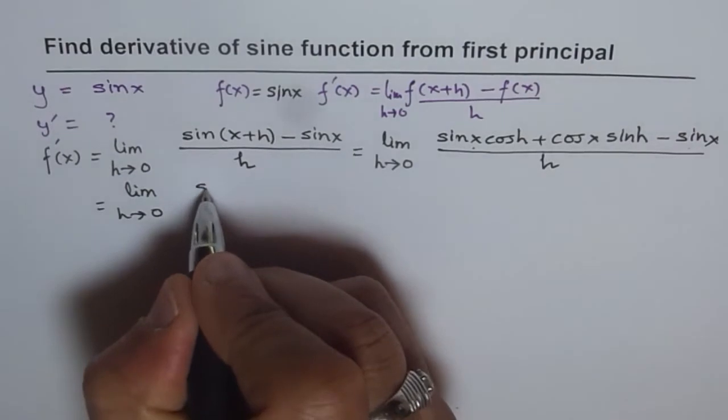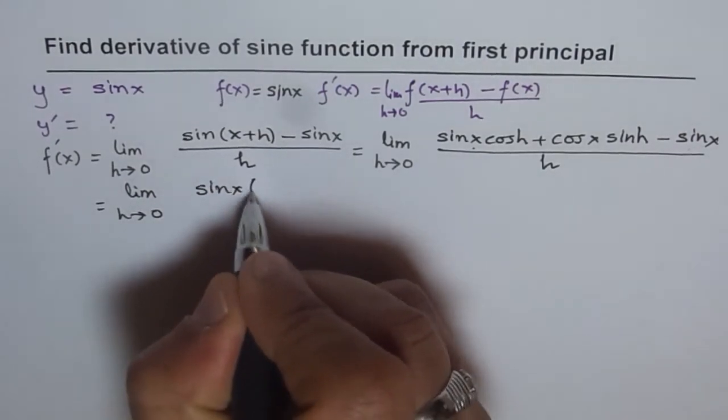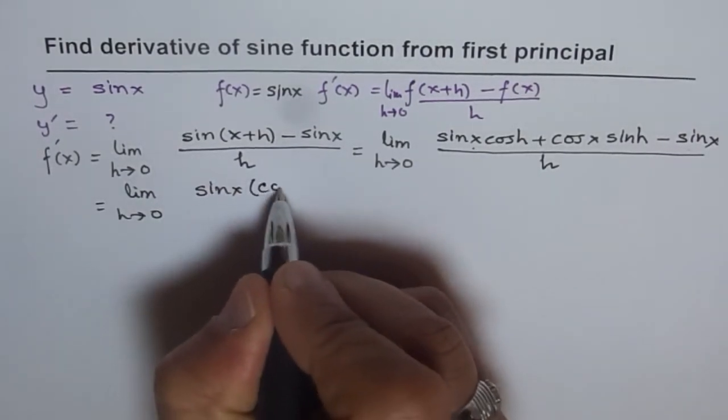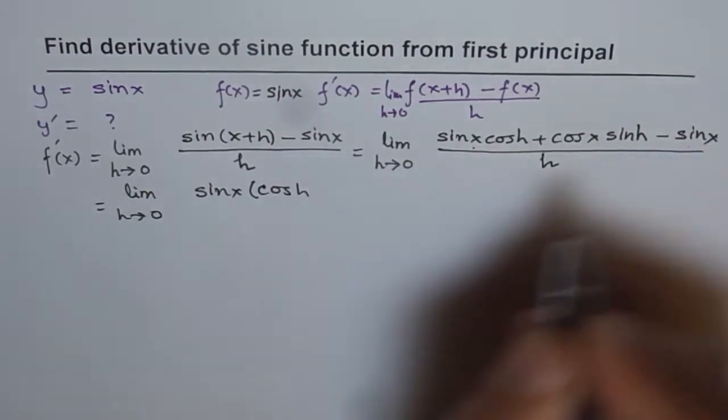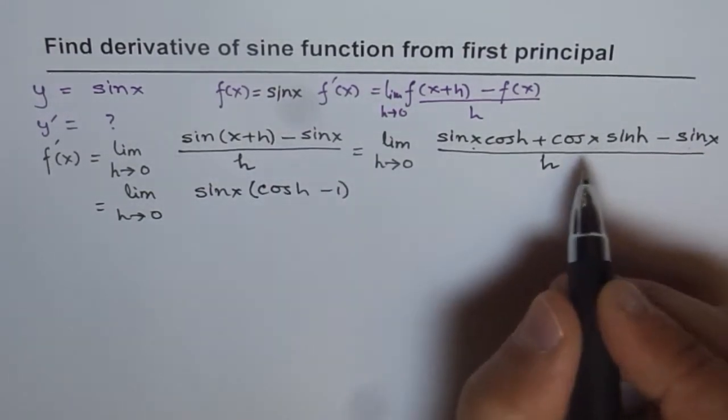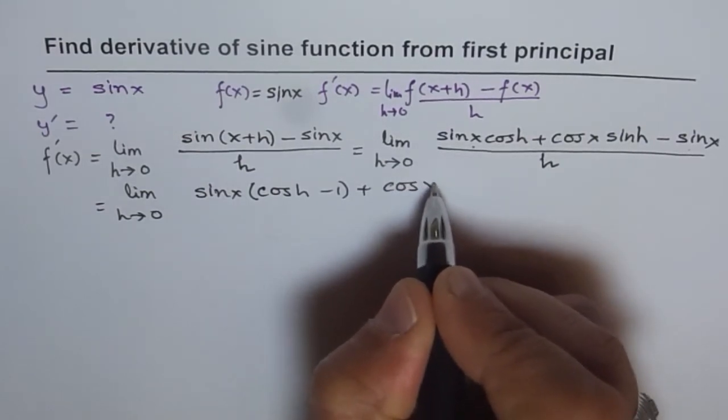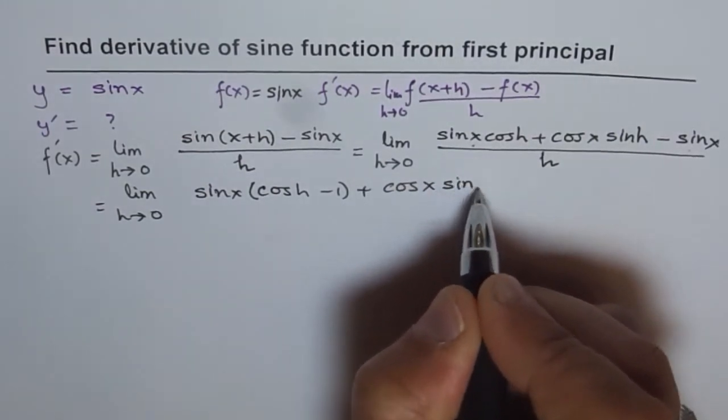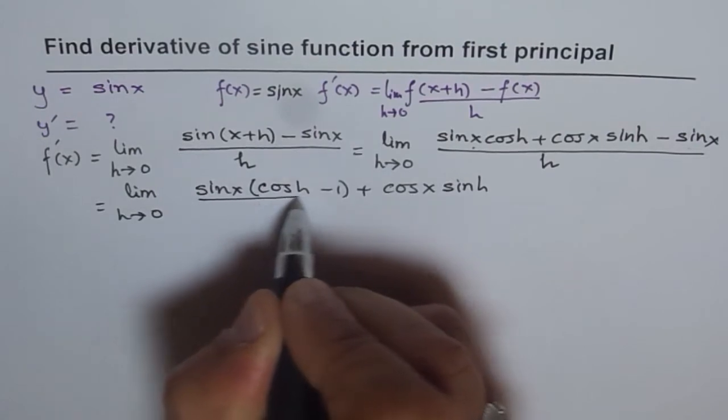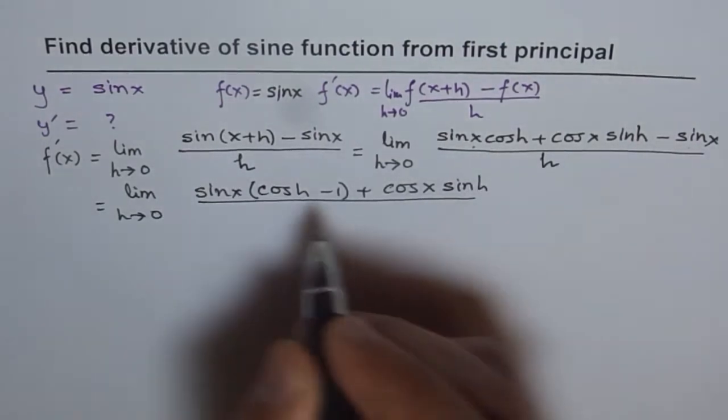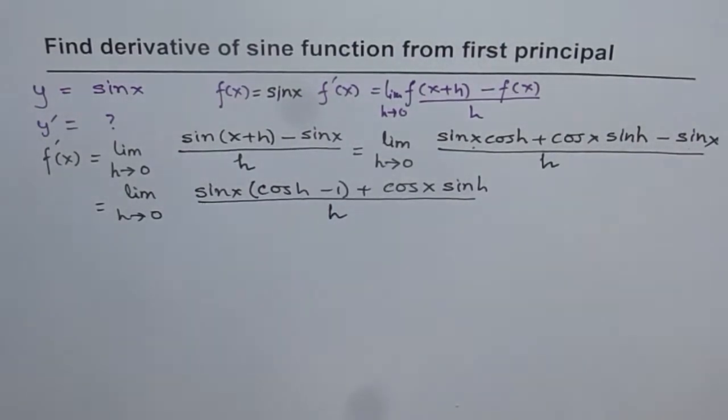So if I take sine x common, what do I get? I get sine x within bracket cos h minus 1, and I am left with plus cos x sine h over h. So I basically rearranged all these things.